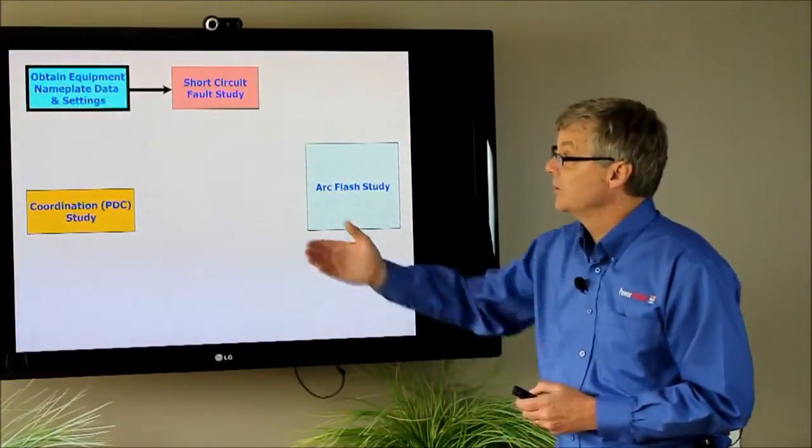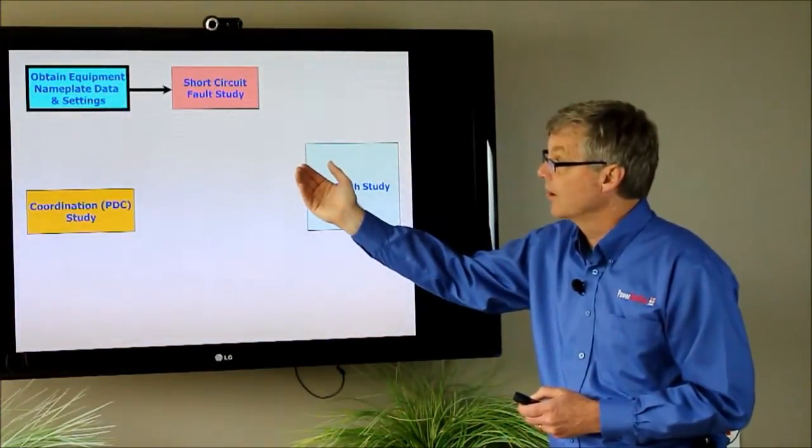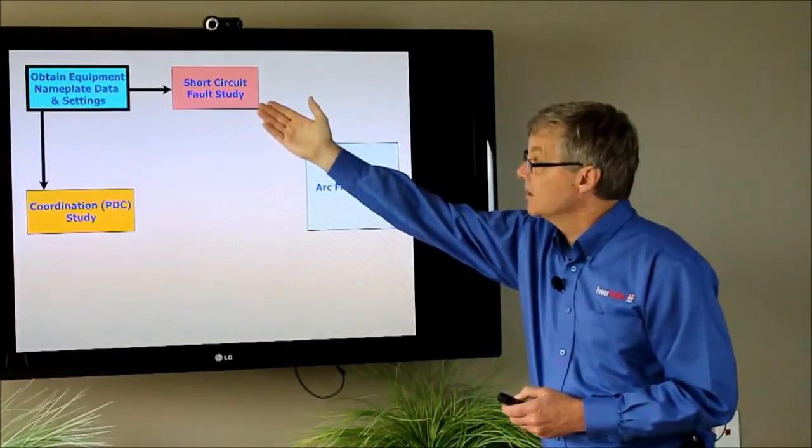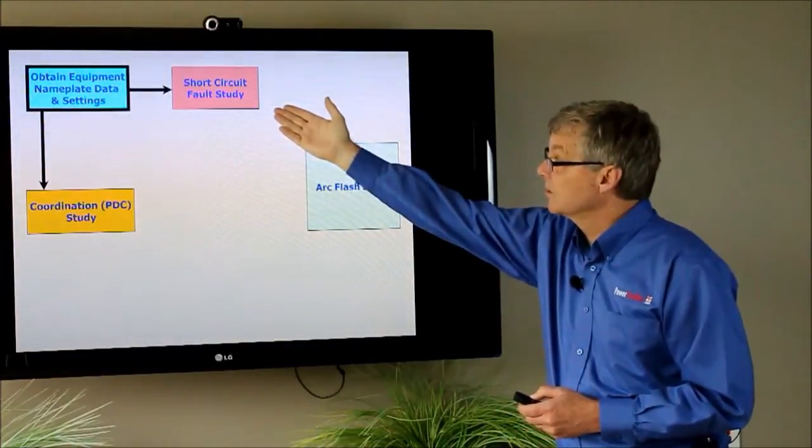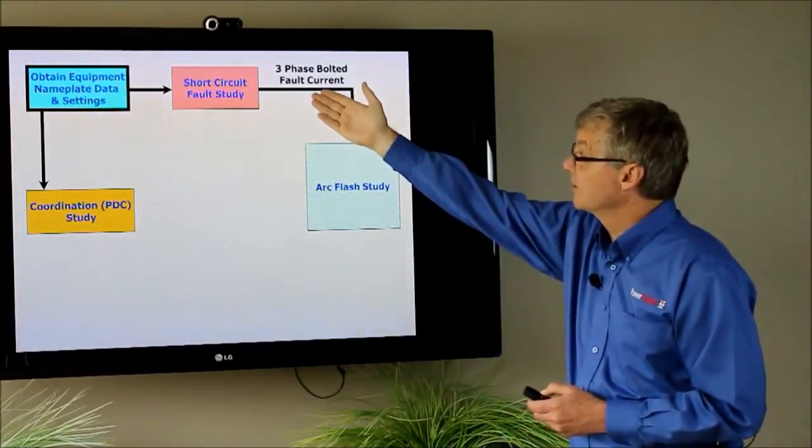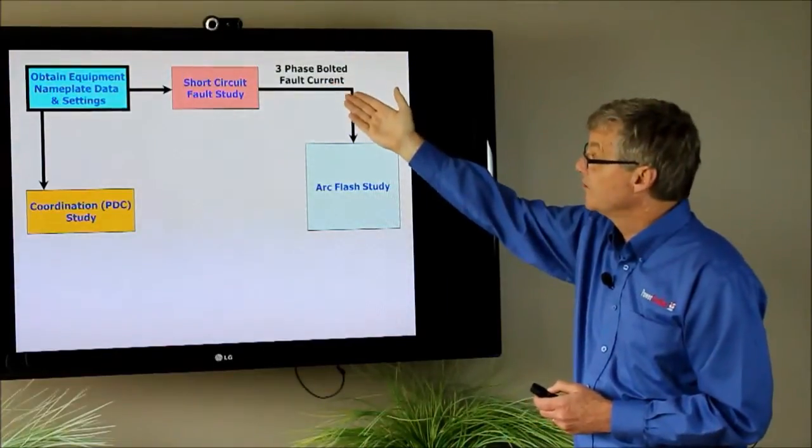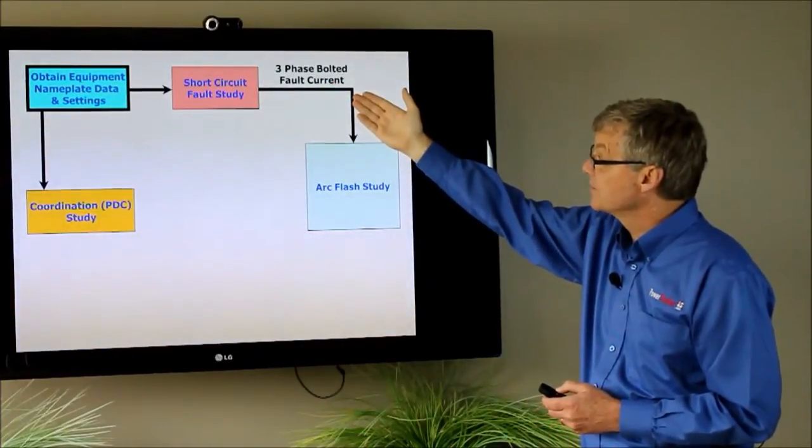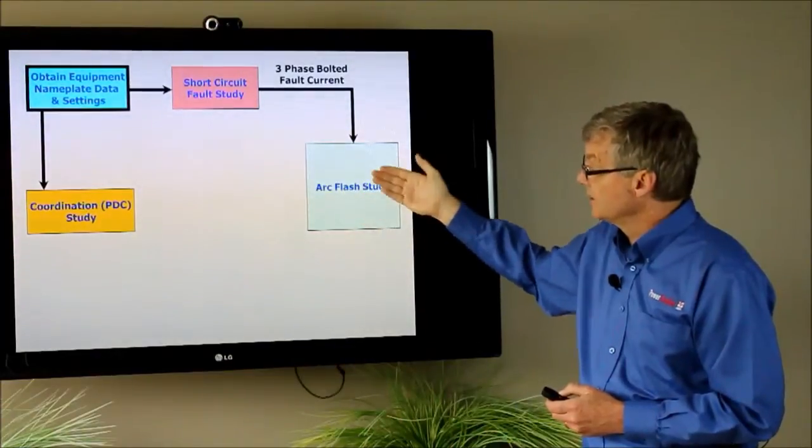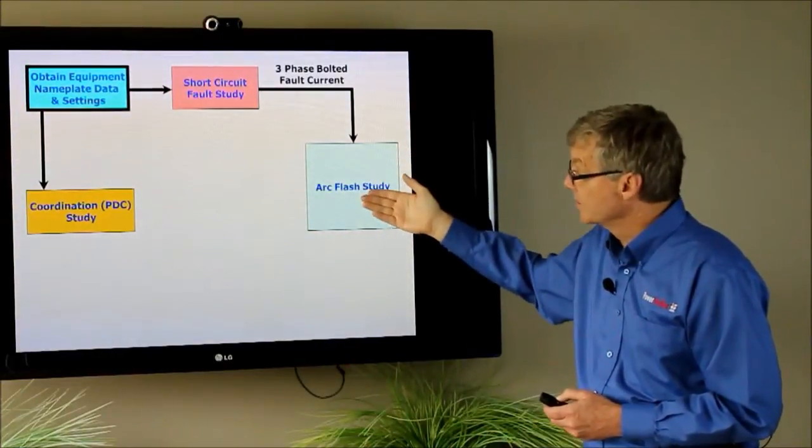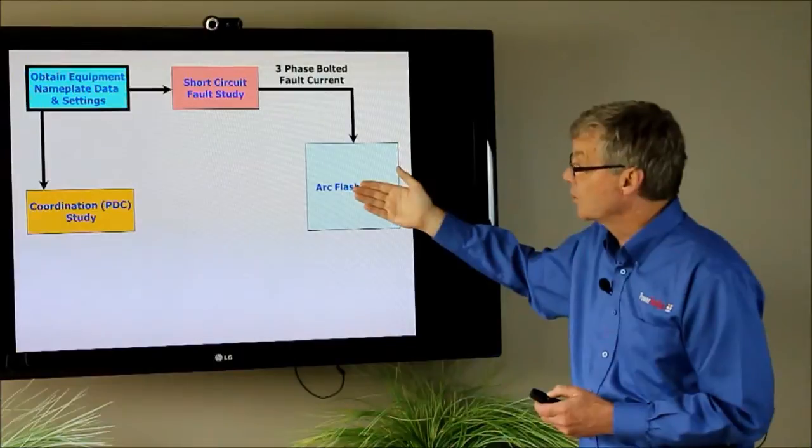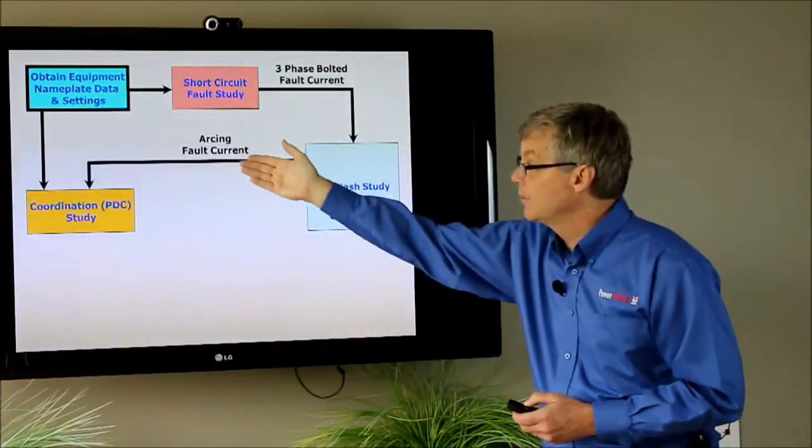Once we have that information then we input that into our computer program and the computer program will do a short circuit calculation. It'll figure out what the three-phase bolted fault currents are and this goes into the arc flash module and depending on some other parameters like voltage and type of equipment it will output what's called the arcing fault current.